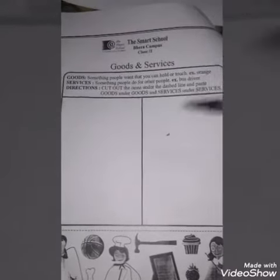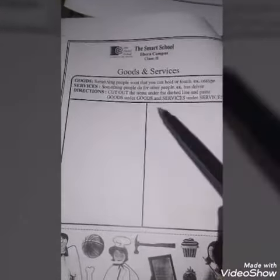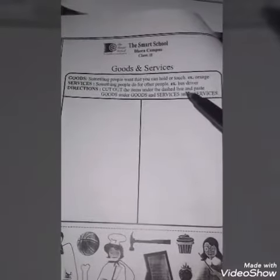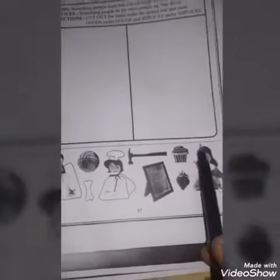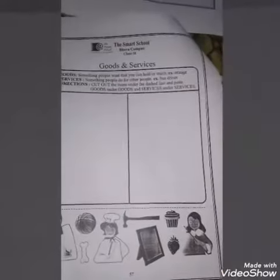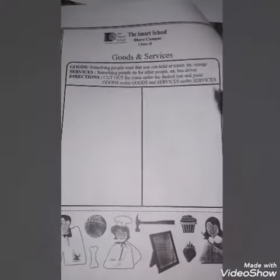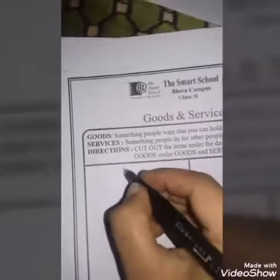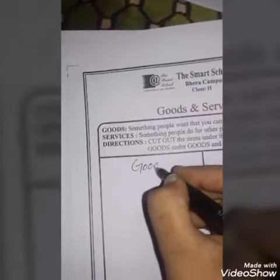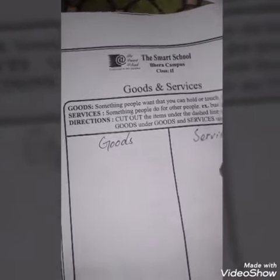The directions say: cut out the items under the dash line — yeh dash line hoti hai, iske niche jo bane hain. Cut them out and paste goods under goods and services under services.